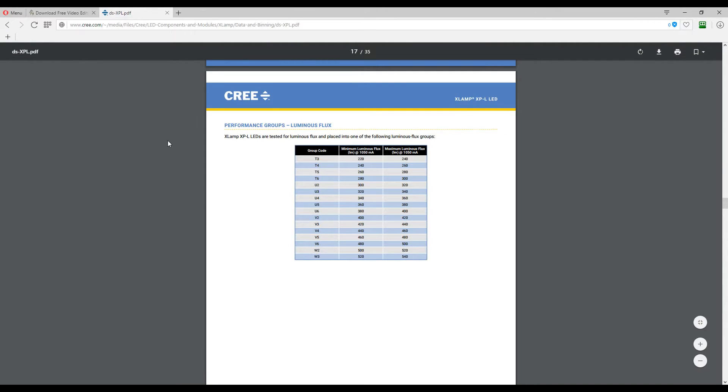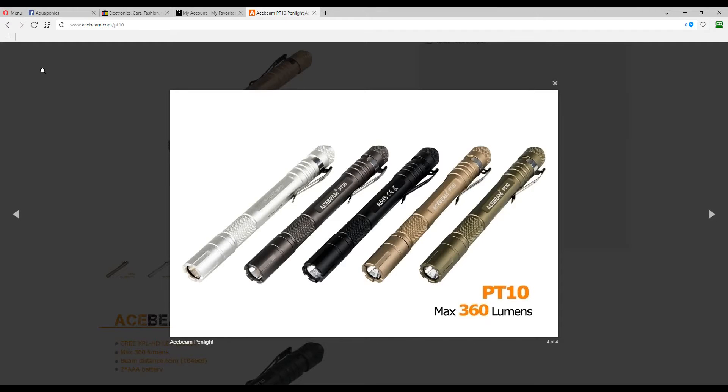And here is the data sheet of the XPL-HD put against the XML T6 and the XPL V6. And we see the W2 HD has an output of 500 lumens but 1050 on the website.